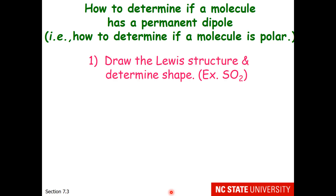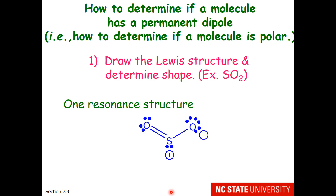First, we need to know what the molecule looks like. Let's work with sulfur dioxide. We can work with just one resonance structure, since we're just looking at the atoms and the shape, not necessarily the bond order. Here is a possible Lewis structure for sulfur dioxide. Notice the bent geometry at near a 120-degree bond angle.